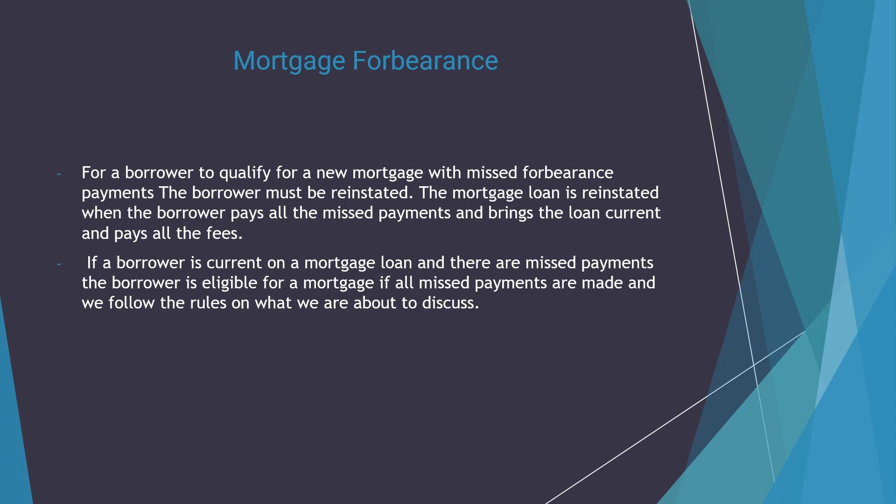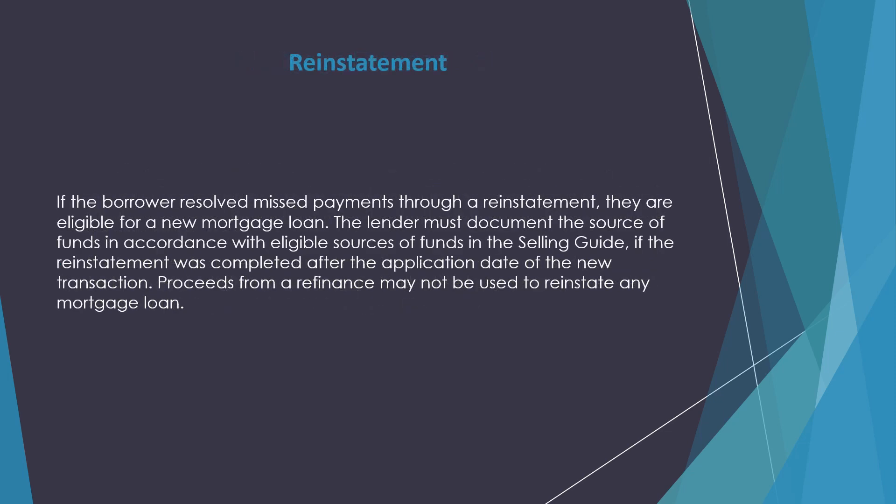If all missed payments are made and we follow the rules, let's discuss how a borrower can reinstate the loan. This is one of the easiest ways, and personally from the underwriting side, it's a lot less risk as the borrower has all the money to pay back what was missed. All the borrower has to do is pay all the forbearance missed payments and all the fees.